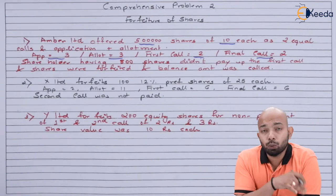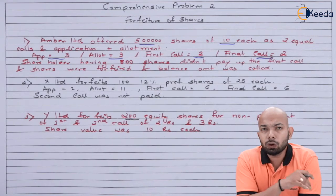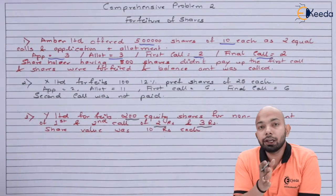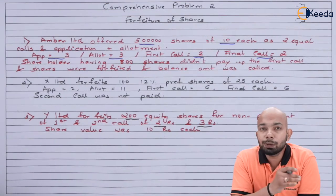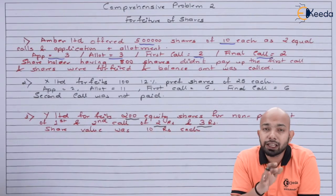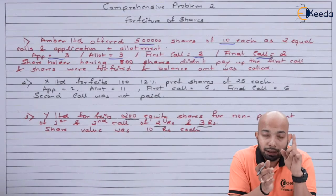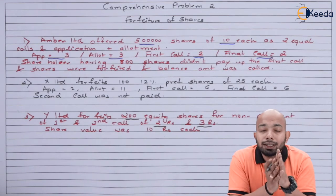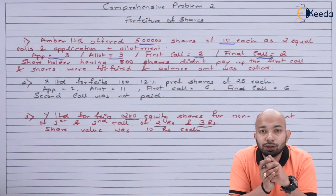The third situation refers to Y Limited, which forfeited 200 equity shares for non-payment of first and second call. The first call was ₹2 per share and the second call was ₹3 per share, with each share having a face value of ₹10. So ₹5 had been received and ₹5 was unpaid, hence the shares were forfeited. For cases two and three, we only need to pass the share forfeiture entries, as all other details are already provided.